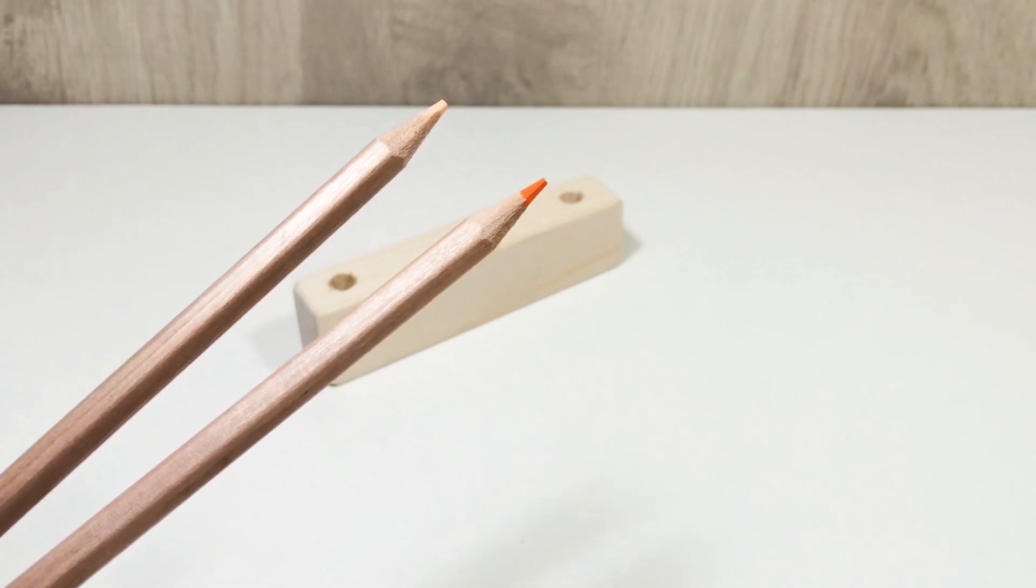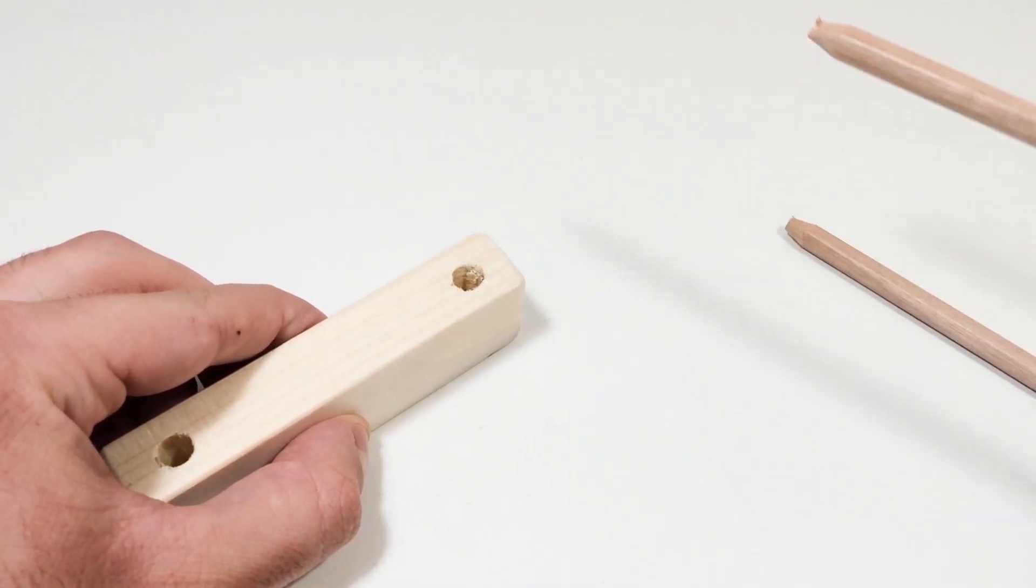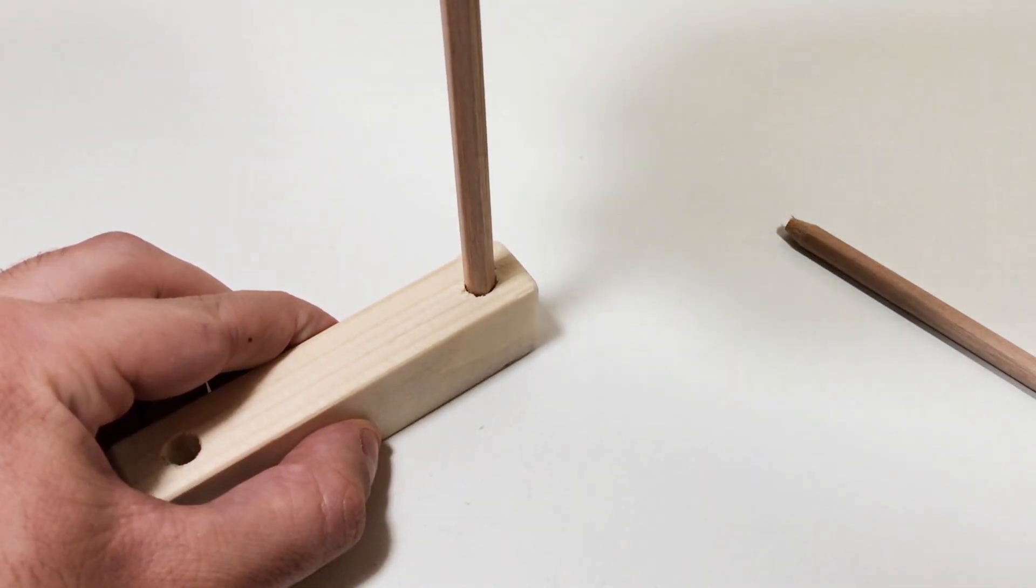Now take two wooden pencils, preferably unpainted for easier handling, and insert them into those holes. These will serve as our vertical supports for the hotwire.